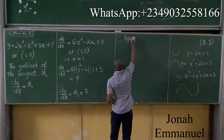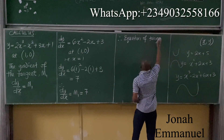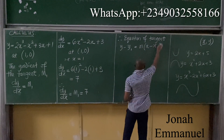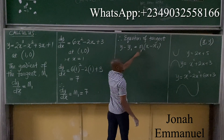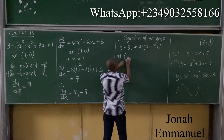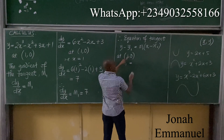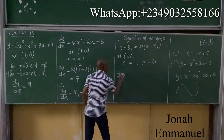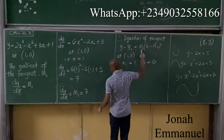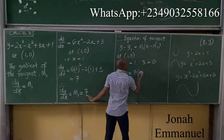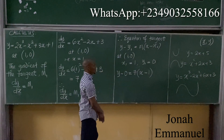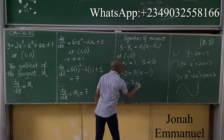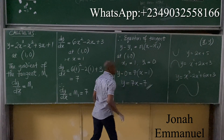The equation of the tangent is Y minus Y1 equals M1 times (X minus X1). At the coordinate (1, 0): X1 = 1, Y1 = 0, and M1 = 7. Substituting: Y minus 0 equals 7 times (X minus 1), which gives Y equals 7X minus 7. This is the equation of the tangent.